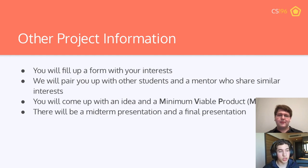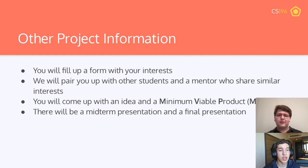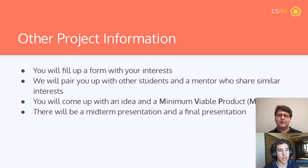We'll be releasing a project interest form sometime later this week, probably Thursday or Friday. This will help us pair you with project managers interested in what you want to work on. Big picture ideas include CS for Good, CS for Education, machine learning, data science, games, or apps. Once we have those forms, we'll pair you with fellow students and mentors based on those interests. Then once the project kicks off, you'll come up with an MVP — a minimum viable product — that outlines the baseline goals for the semester.